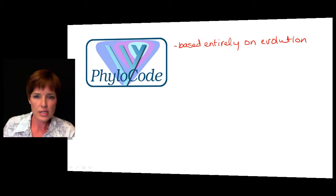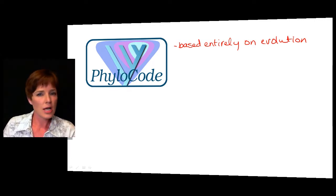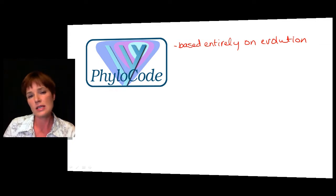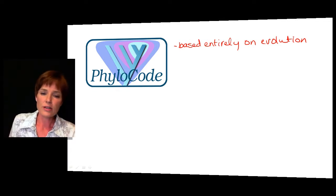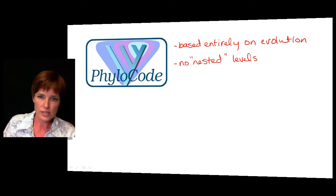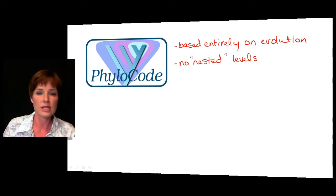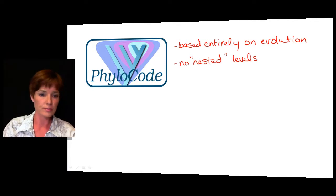Coming up with a PhyloCode is a complicated process because we would have to rename a lot of organisms. If we really want to be sure about relationships, one of the easiest things to look at would be the molecules involved in heredity — so you would go back to the DNA and compare DNA sequences between organisms. One thing the PhyloCode would not have is nested levels, so we would have no categories like kingdoms, phylums, classes, orders, or genera — just specific names for individual species. Nevertheless, this is something that is beginning to catch pace with scientists.